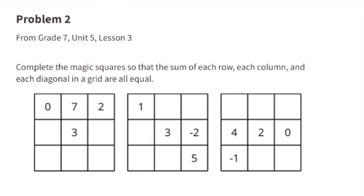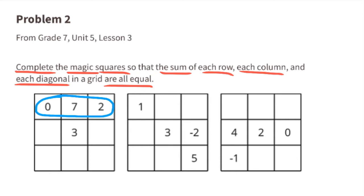Problem number 2 from 7th grade Unit 5 Lesson 3: complete the magic squares so that the sum of each row, each column, and each diagonal in the grid are all equal. Looking at the first grid on the left, they've given us 0, 7, and 2. If we add those up, the total sum is 9, so each row, column, and diagonal must sum to 9.